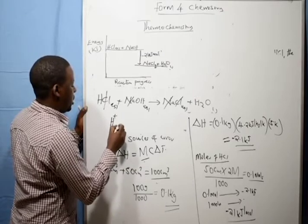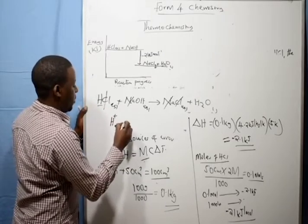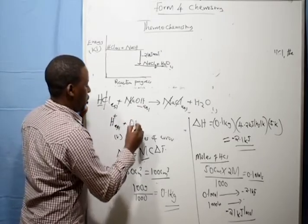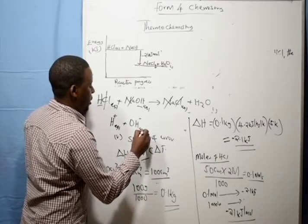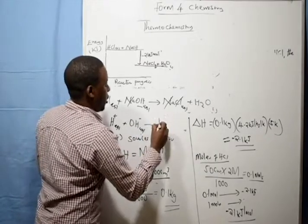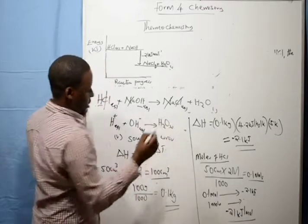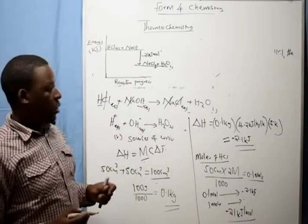Hydrogen ions plus OH minus gives you water. That is the ionic equation. Hydrogen ions react with hydroxyl ions to form water.